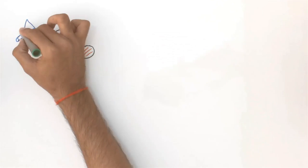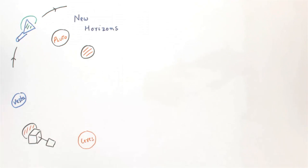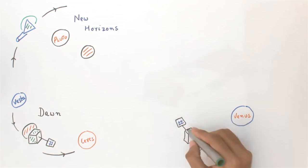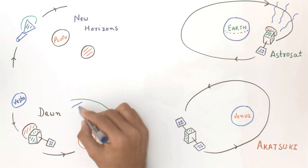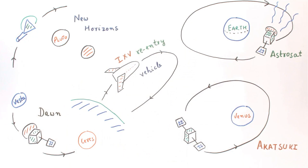NASA's New Horizons Pluto mission, NASA again with Dawn asteroid belt mission, Japan's JAXA with Akatsuki Venus, India's ISRO with AstroSat Space Observatory, and ESA's futuristic IXV re-entry vehicle. I'm really growing old, am I? Oh, come on!